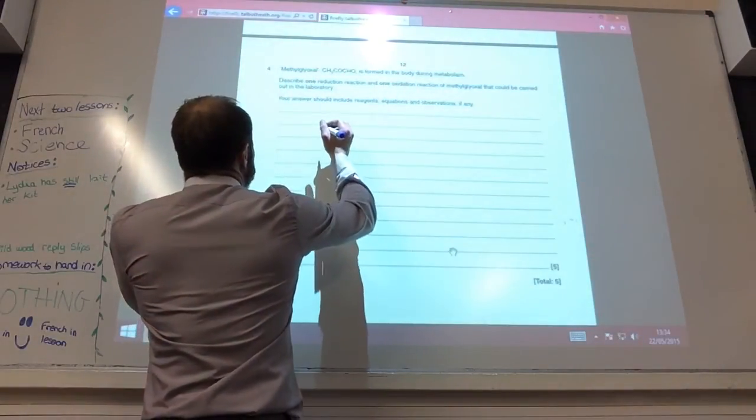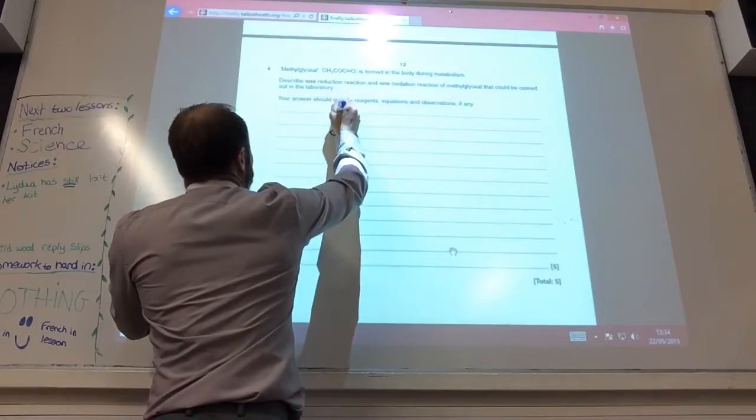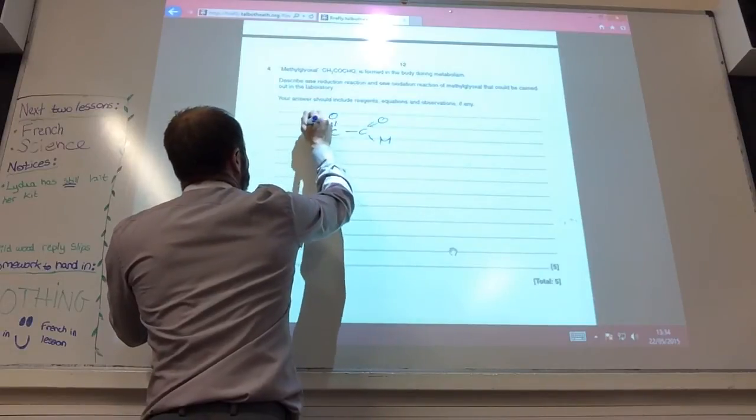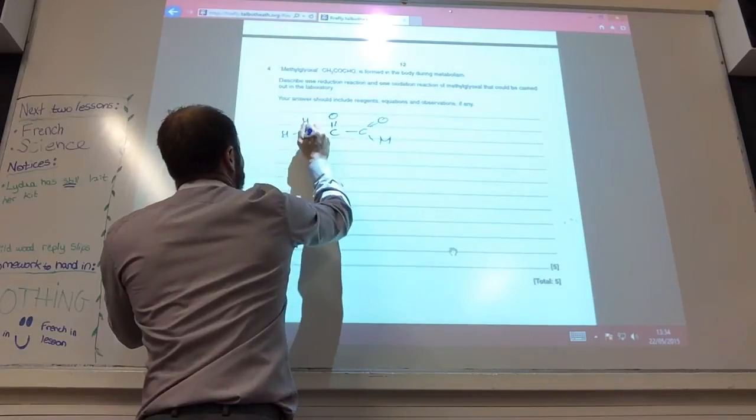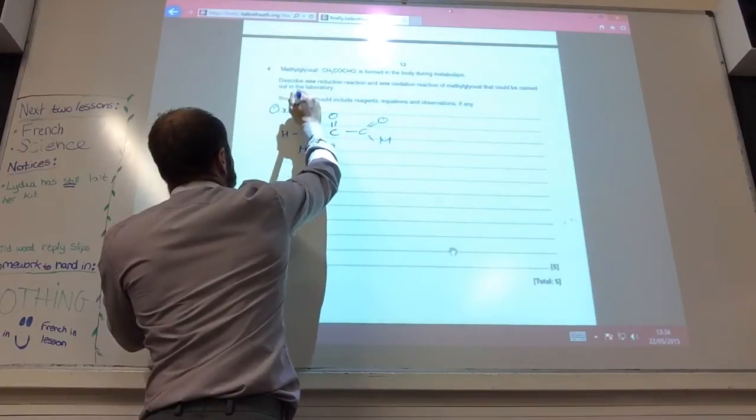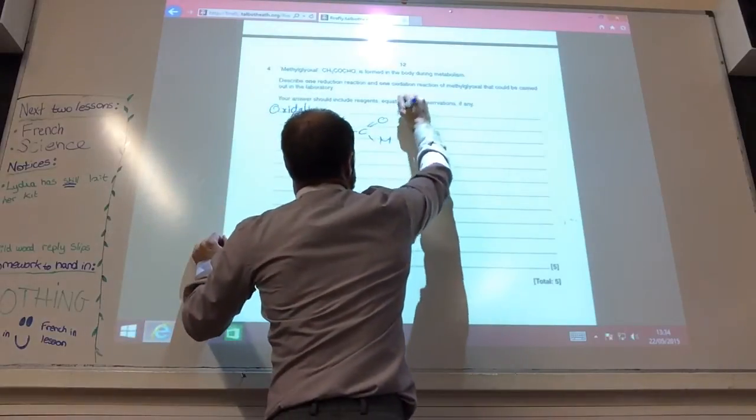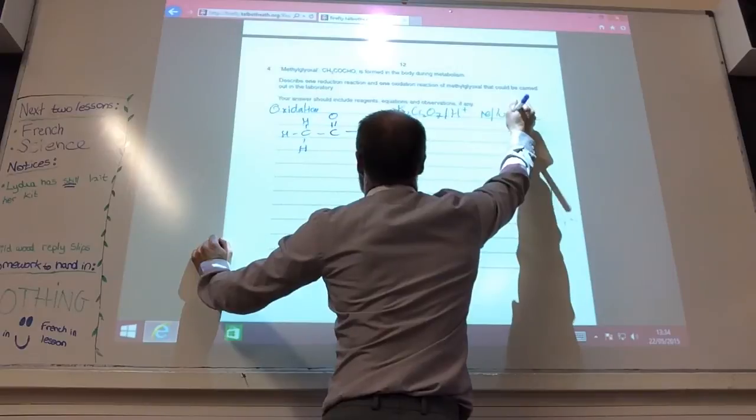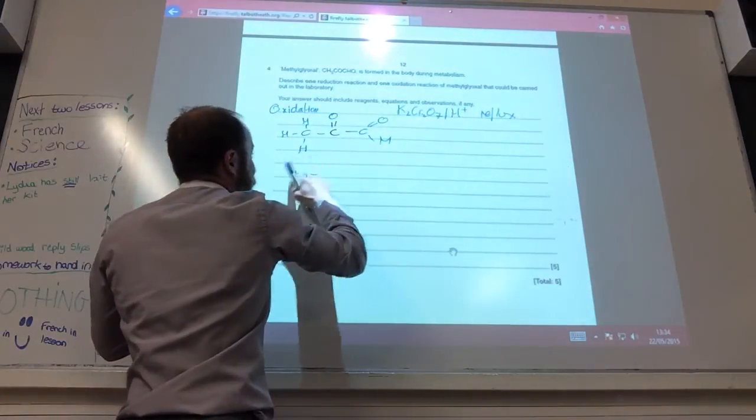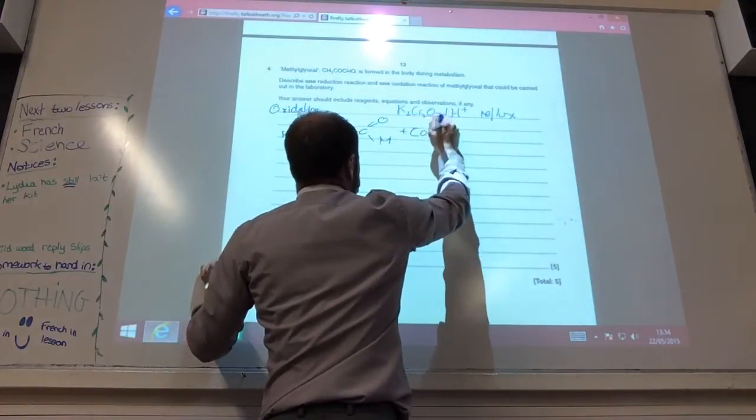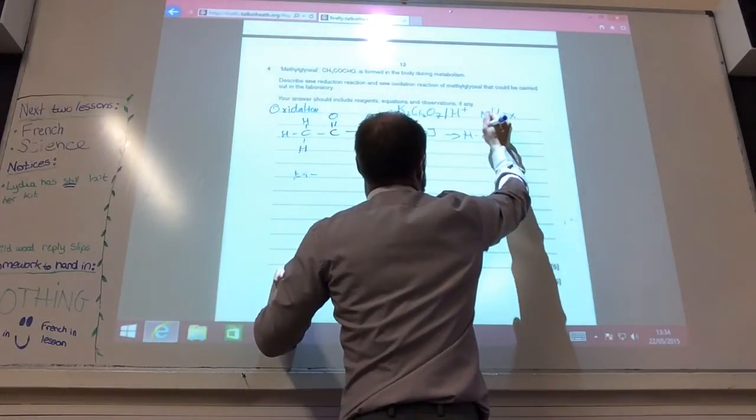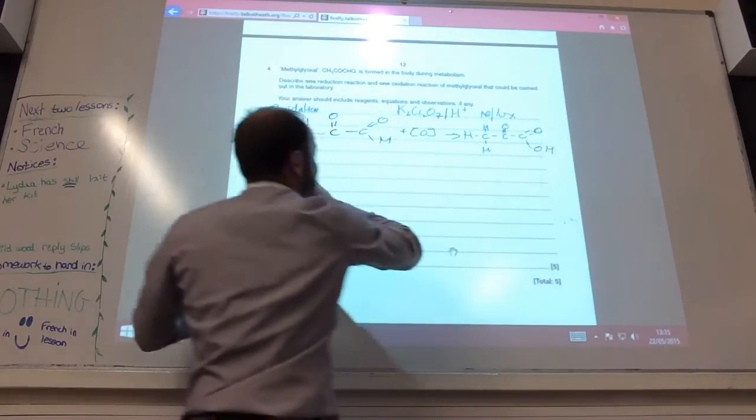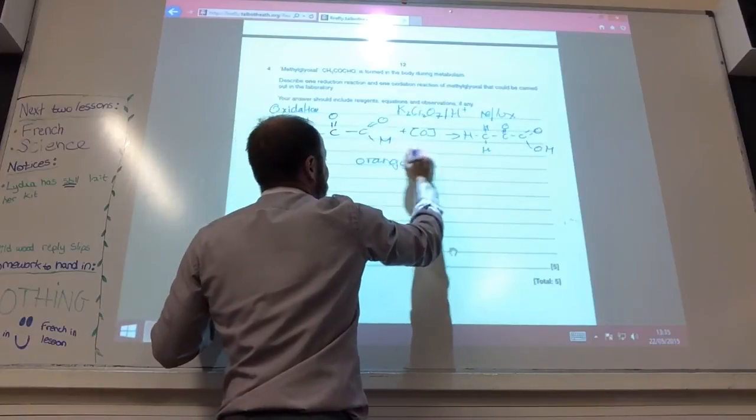So let's draw this out. Let's do oxidation first of all. For oxidation I would use potassium dichromate in acid and I would reflux. What would that give me? So that would be plus square bracket O.